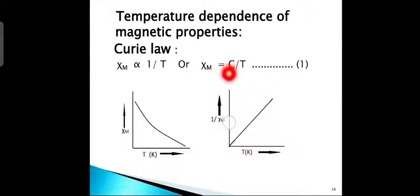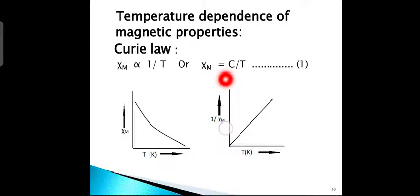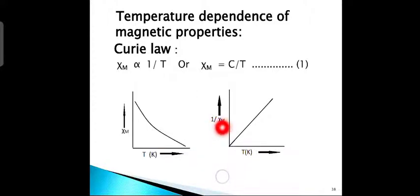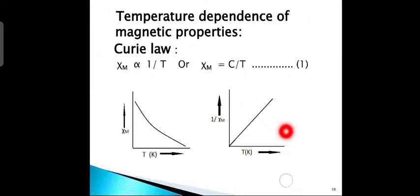Curie's law is obeyed by paramagnetic substances that are magnetically dilute, meaning the paramagnetic centres are well separated by diamagnetic atoms. When we plot χ_M against absolute temperature, a parabolic curve is obtained. But if you plot the reciprocal of χ_M against absolute temperature, a straight line passing through the origin is obtained, and the slope of the line gives C.